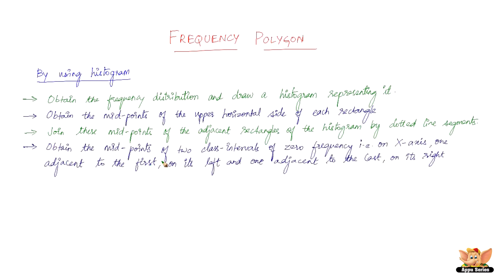Fourth step: obtain the midpoints of two class intervals of zero frequency on the x-axis - one adjacent to the first on its left and one adjacent to the last on its right. This particular step may appear confusing.